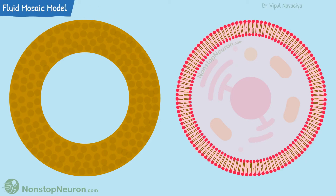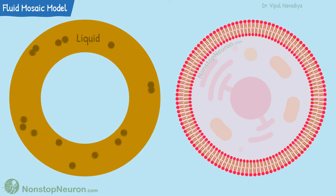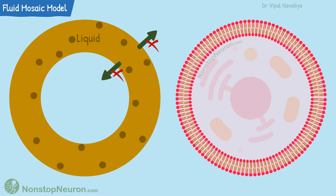Our experiment also helps understand the fluid mosaic model of biological membrane. The oil making this sphere is in liquid state — the molecules in this layer are moving randomly as in any liquid. However, this movement can occur only within the layer; the molecules cannot escape into the water.